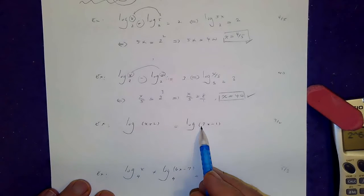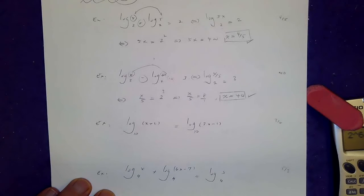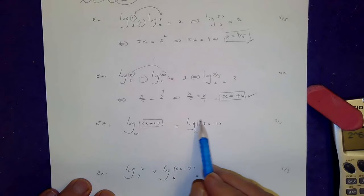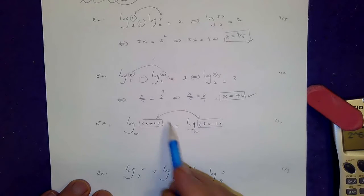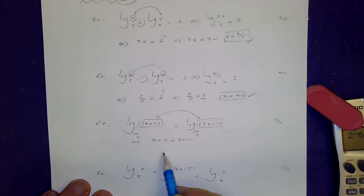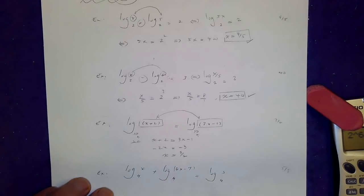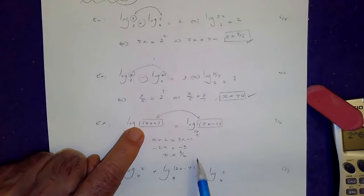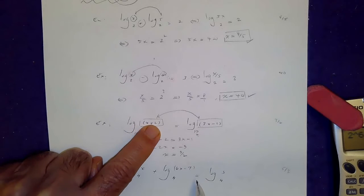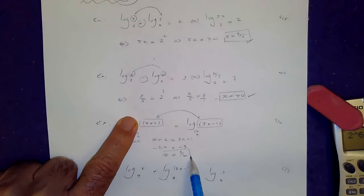Sometimes you have one log on each side. If there is no base shown, the assumption is base 10. If the bases match and you have a single log on each side, just set the logarands equal. So set x plus 2 equal to 3x minus 1. Solving: negative 2x equals negative 3, so x equals 3 halves. Checking: 3 times (3/2) gives 9/2 minus 1, which is positive — passes the test.